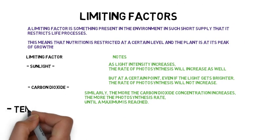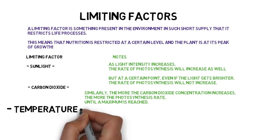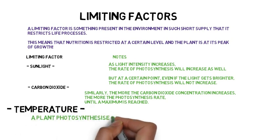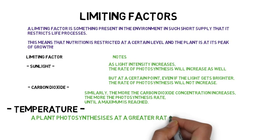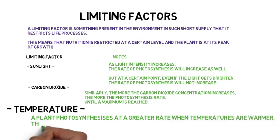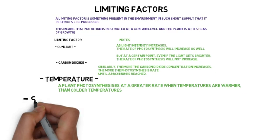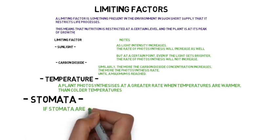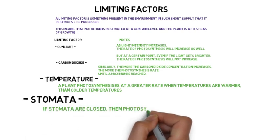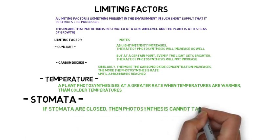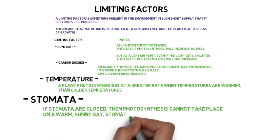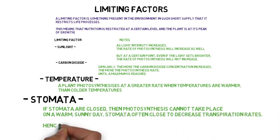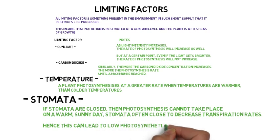Temperature: a plant photosynthesises at a greater rate when temperatures are warmer as opposed to colder. Stomata: if stomata are closed, then photosynthesis cannot take place. On a warm sunny day, stomata often close to decrease transpiration rates, and hence this can lead to low photosynthesis rates.